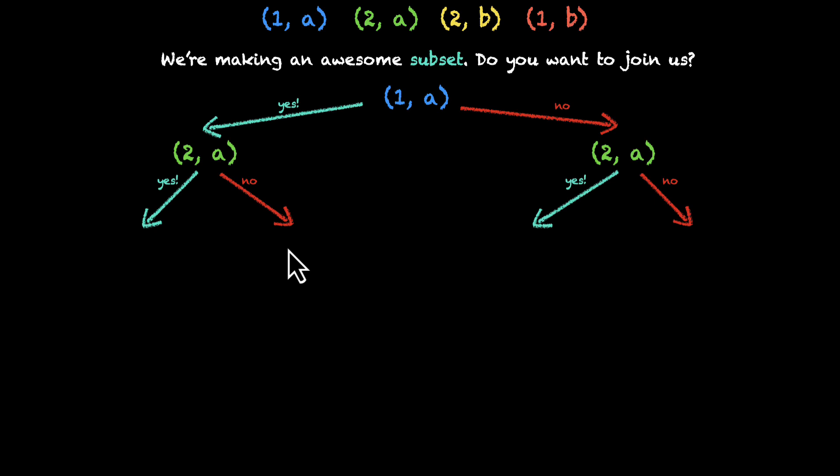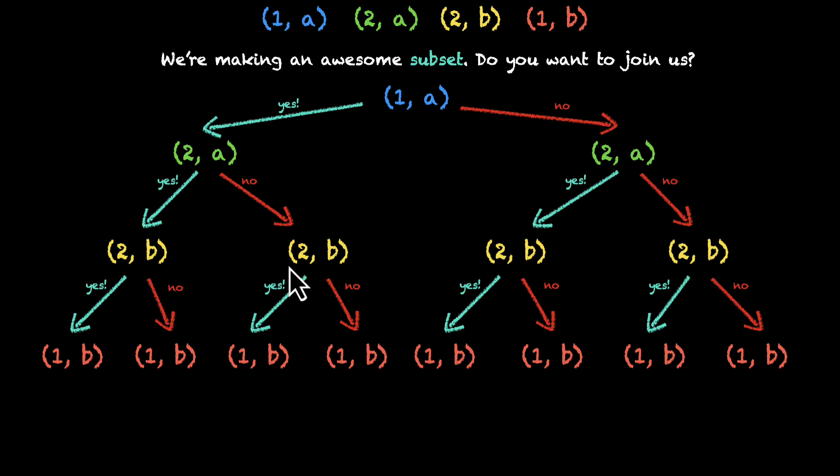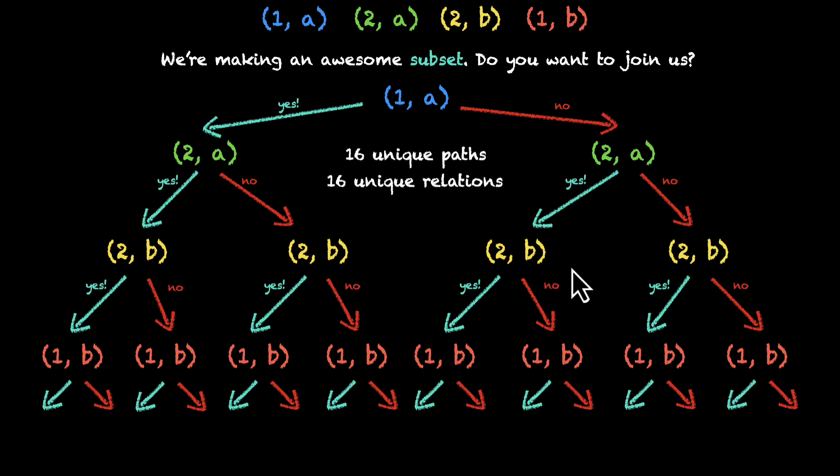Every single path will give us a unique subset. After 2A, we're going to ask this to 2B. And after 2B, we're going to ask this to 1B. After we're done asking all four of them, let's count how many different paths do we have. So we have 2 times 2, 4 times 2, 8 times 2, 16. We have 16 unique paths, which means we have 16 unique relations. And that's what we want to figure out. How many possible relations can we have? We can have 16 possible relations.